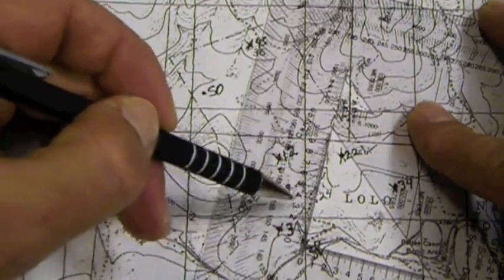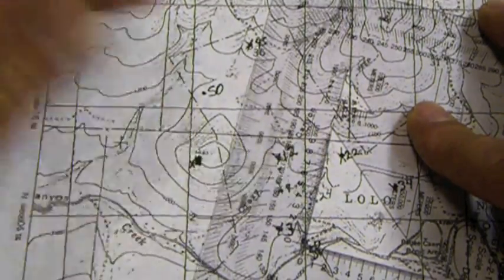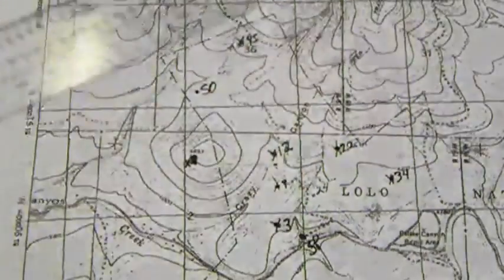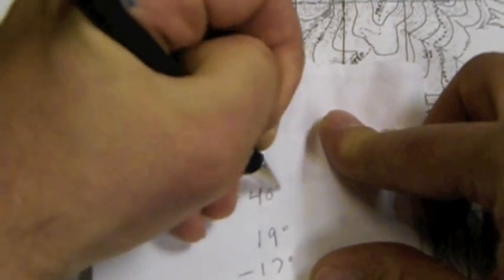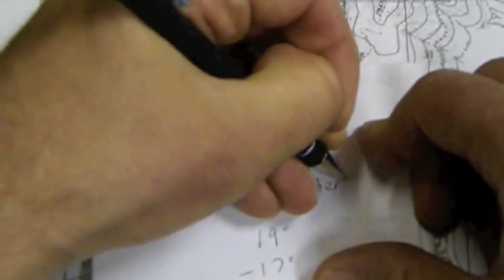And then we're just going to go ahead and simply count. Zero, 100 meters, 200 meters, 300 meters, 400 meters. We're about all set here. We've got 400 meters written down so we don't forget our distance.